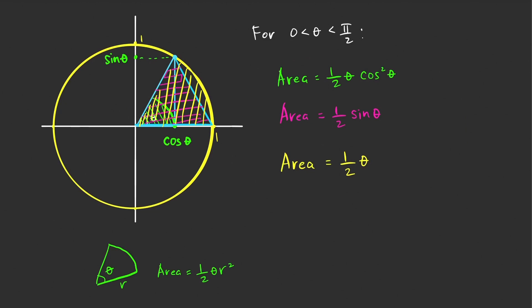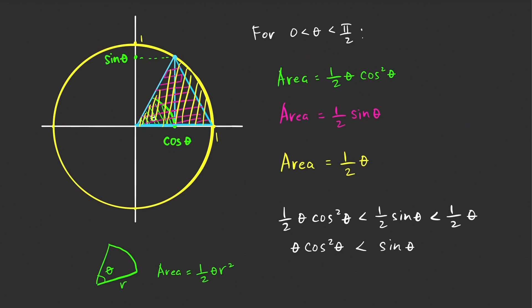So it is clear from this figure that we have the following relationship: one-half theta cosine squared theta is less than one-half sine theta, which is less than one-half theta. Multiplying all sides by two gives us: theta cosine squared theta is less than sine theta, which is less than theta.